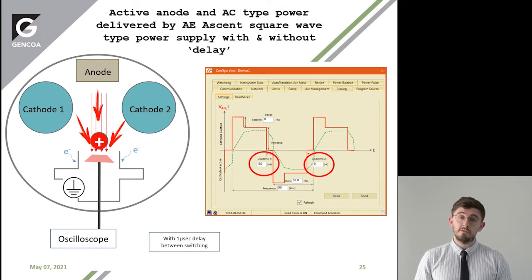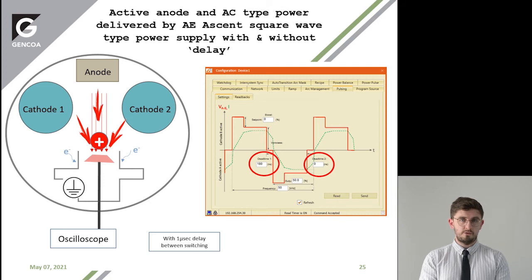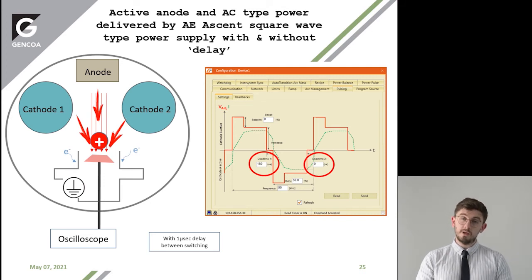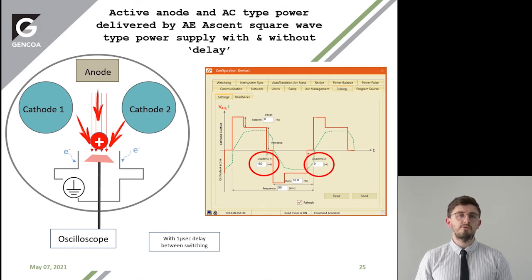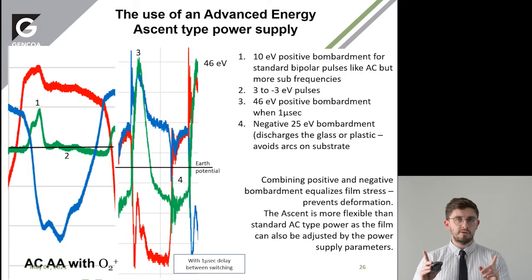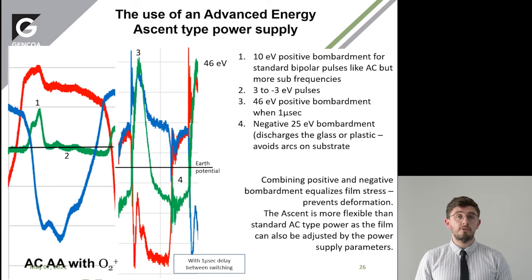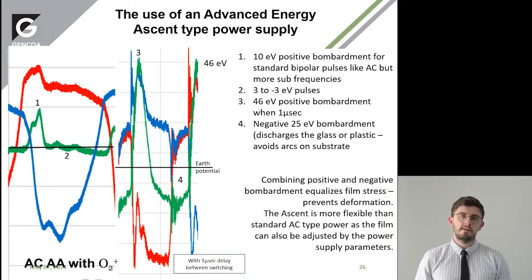On the left, we've got the AC system, the active anode, and the gas injected through the anode. On the right, this is with the square wave Advanced Energy Ascent power supply, with the gas also injected through the anode — very similar processes but different power: AC and square wave. When the AE Ascent power supply is used, you can see the amplitude of the voltage pulse is massively increased.